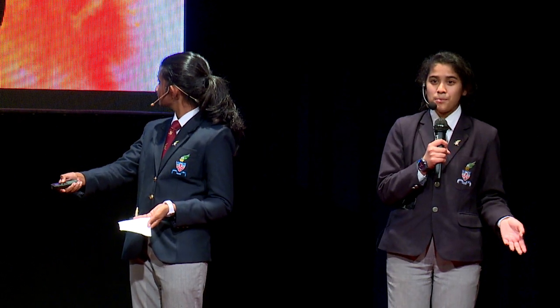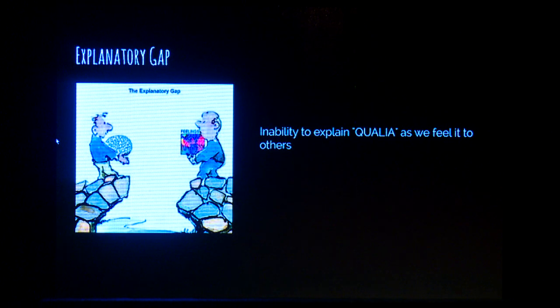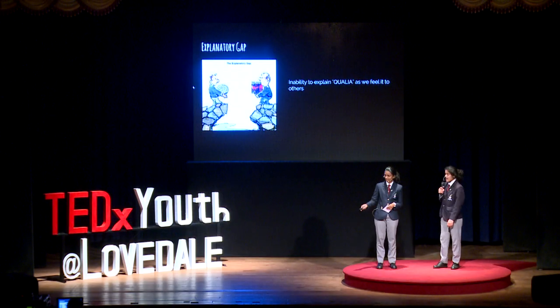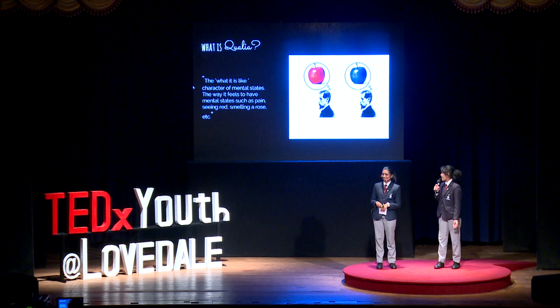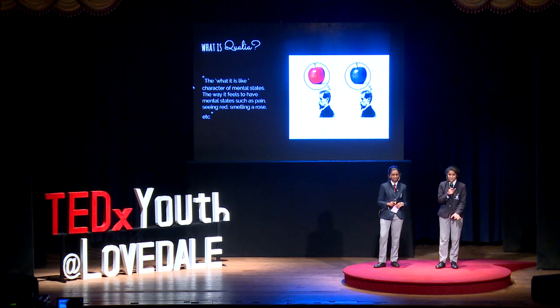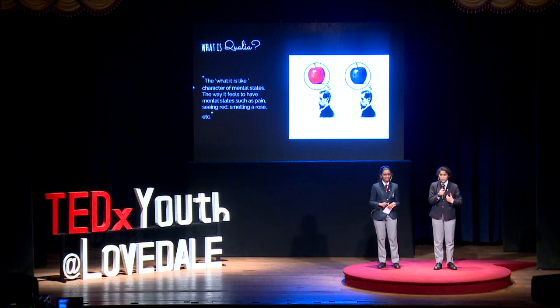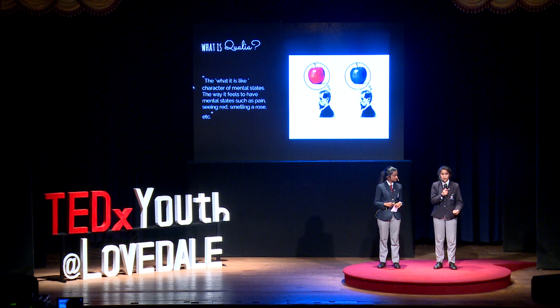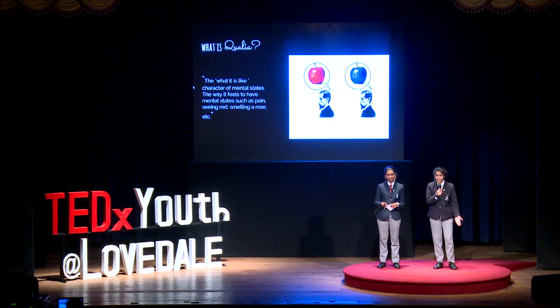This phenomenon is known as the explanatory gap. The explanatory gap is quite literally a gap in our abilities to explain — it is our inability to explain qualia as we feel it to others. There have been many different definitions of qualia over time, the simplest being the 'what it is like' character of having mental states — the way it feels to have mental states such as pain, seeing red, smelling a rose, etc. Qualia is basically what we feel: our unique experiences of feeling pain, of seeing the color red, or smelling a rose.